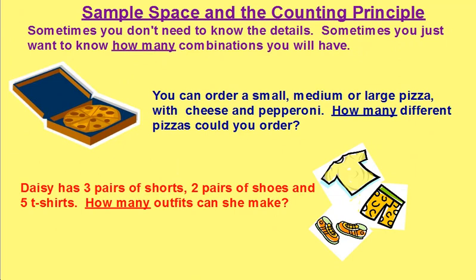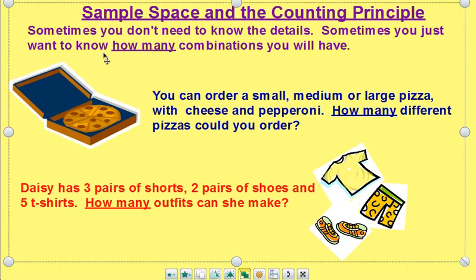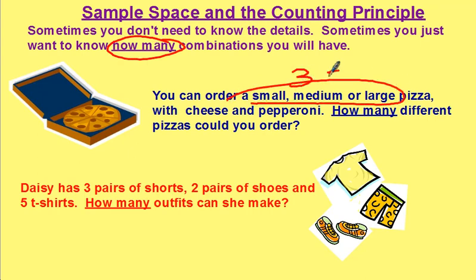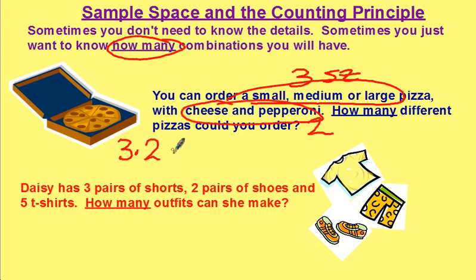Sample space and the counting principle. Sometimes you don't need to know all the details — you just want to know how many combinations you will have. In this case, we had three sizes of pizza and two toppings. Three times two equals six combinations.